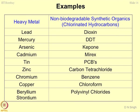Examples of heavy metals and non-biodegradable synthetic organics include: lead (associated with dioxin), mercury (in DDT), arsenic, capone, cadmium, mirex, tin (PCB boards), zinc (in carbon tetrachloride), chromium, benzene, copper, chloroform, beryllium, strontium, and PVC.